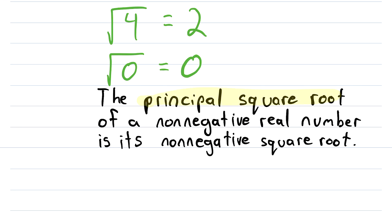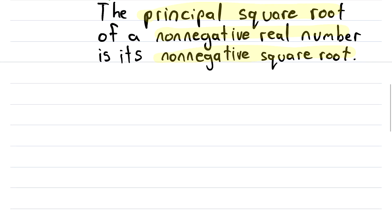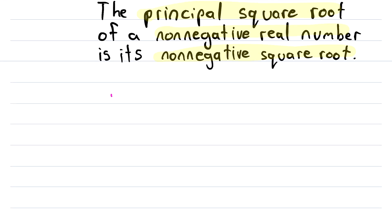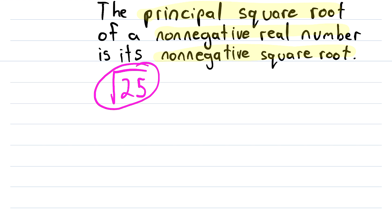So again, the principal square root of a non-negative real number is its non-negative square root. As another example, we could look at the principal square root of 25. The square roots of 25 are 5 and negative 5. But again, this notation refers specifically to the principal square root, which is just equal to positive 5, because 5 is the non-negative square root of 25.